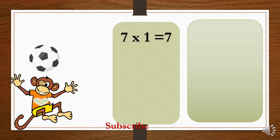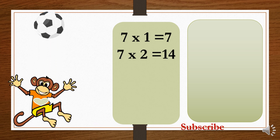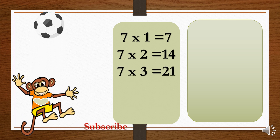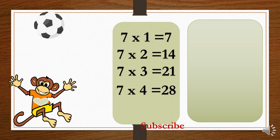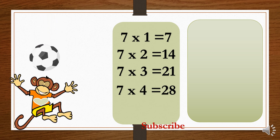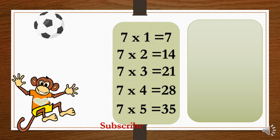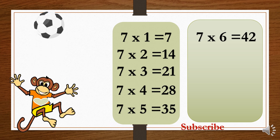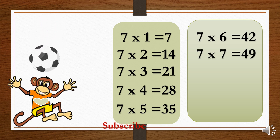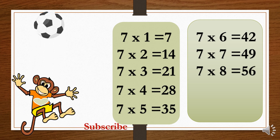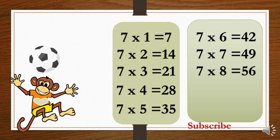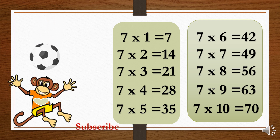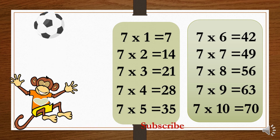7×1=7. 7×2=14. 7×3=21. 7×4=28. 7×5=35. 7×6=42. 7×7=49. 7×8=56. 7×9=63. 7×10=70.